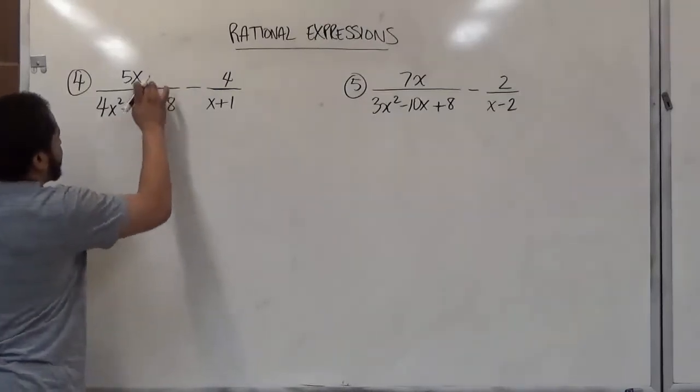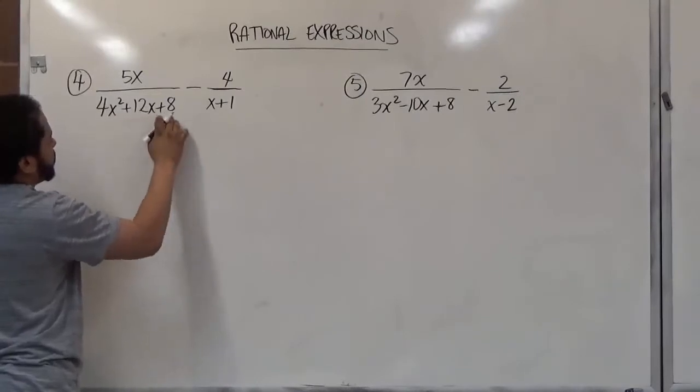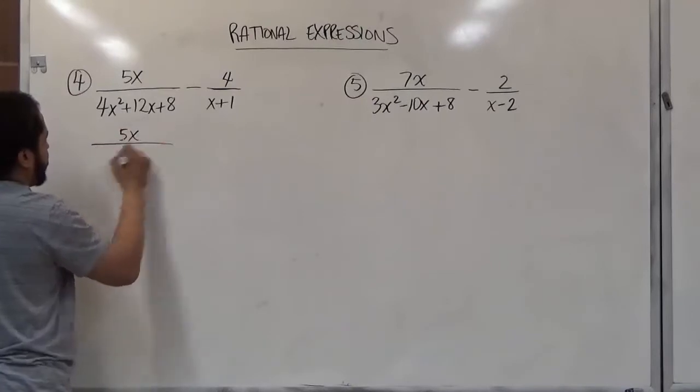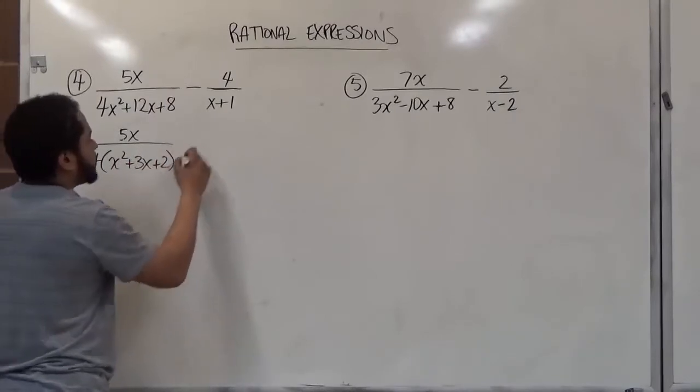So here the first step we're going to take is factoring out the greatest common factor. We notice they all have multiples of 4 in the front, so we're going to factor that out. We'll keep the 5x on top, factor the 4 out, and we're left with x squared plus 3x plus 2, which is easily factorable.